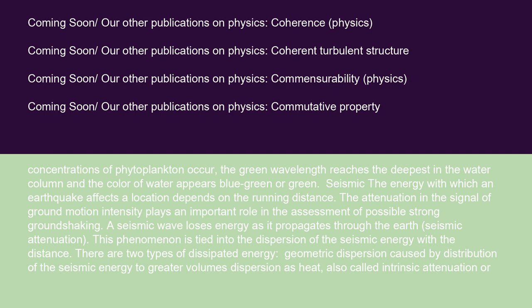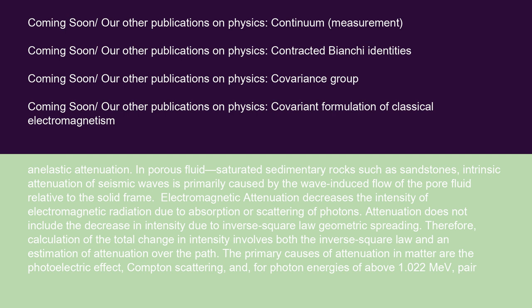The energy with which an earthquake affects a location depends on the distance. Attenuation in the signal of ground motion intensity plays an important role in the assessment of possible strong ground shaking. A seismic wave loses energy as it propagates through the earth — this is seismic attenuation. There are two types of dissipated energy: geometric dispersion (distribution of seismic energy to greater volumes) and dispersion as heat, also called intrinsic or anelastic attenuation. In porous, fluid-saturated sedimentary rocks such as sandstones, intrinsic attenuation is primarily caused by wave-induced flow of the pore fluid relative to the solid frame.